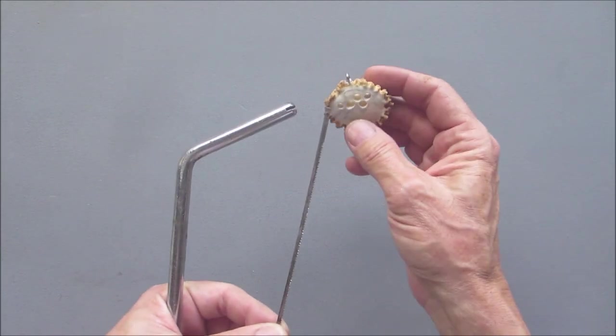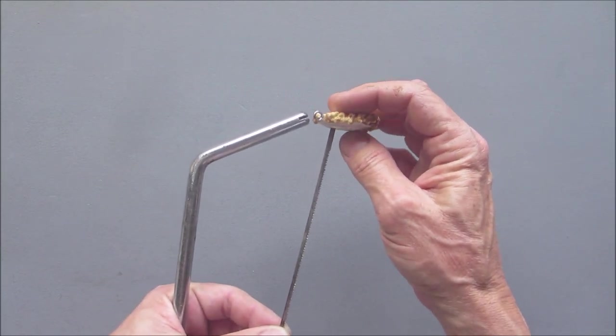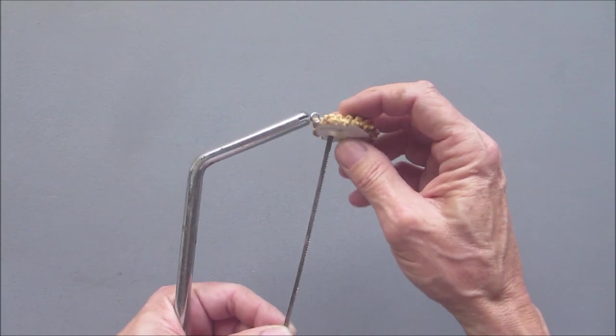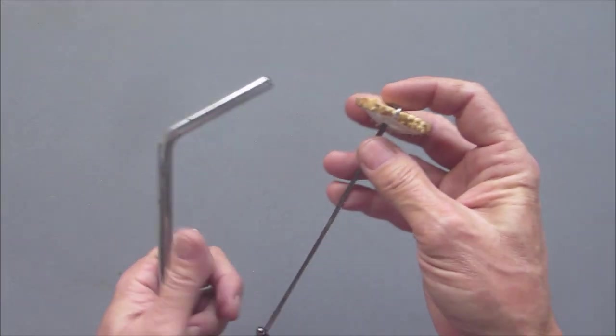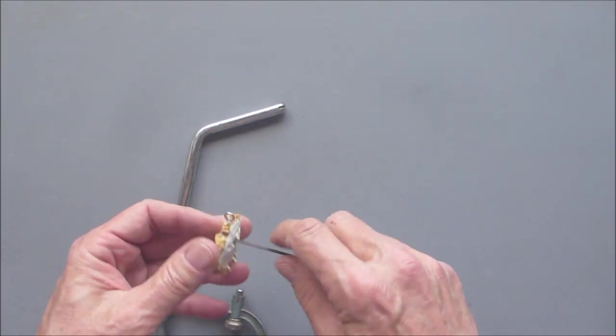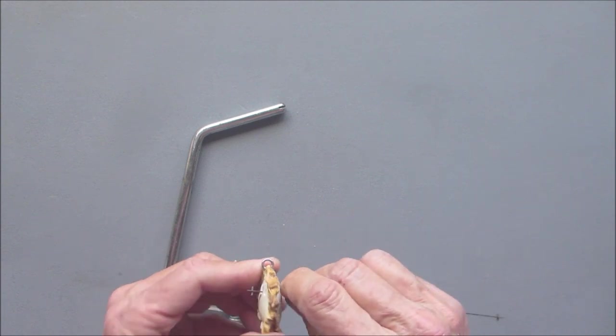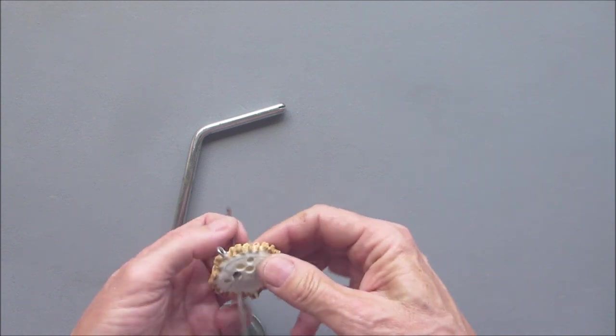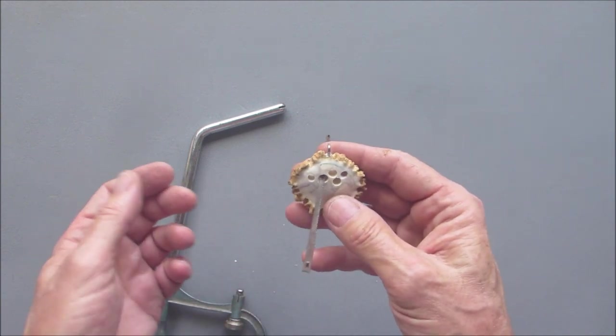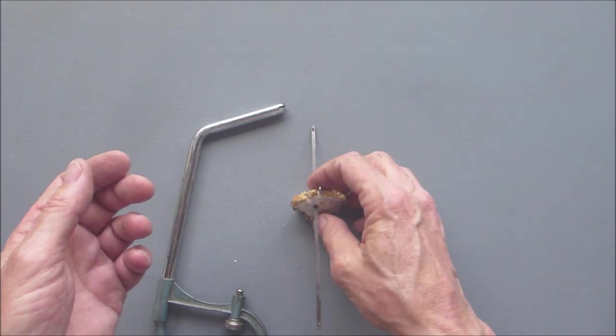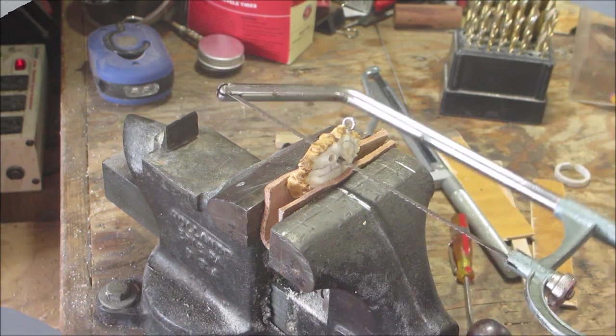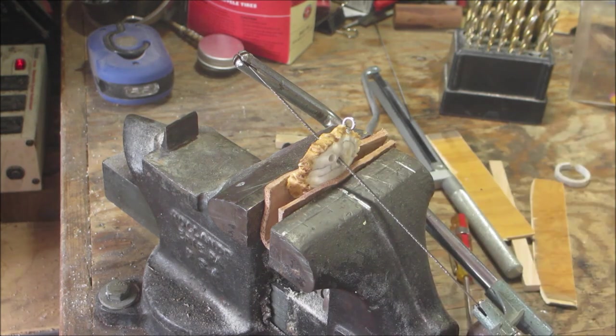And then what I'll do is pop this in here into one of the holes if I can get it through. Now I'll set this up in my vise and I'll start cutting it. So I'll bring you over there for a little bit of that. All right, so I got it in the vise padded with a piece of leather and I'm just going to start cutting.